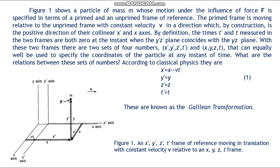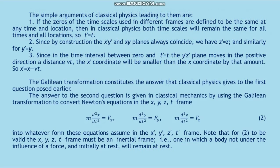Figure 1: n-x-asterisk y-asterisk z-asterisk t-asterisk frame of reference moving in translation with constant velocity v relative to the n-x-y-z-t frame. The simple arguments of classical physics leading to these are: First, if the zeros of the time scales used in different frames are defined to be the same, at any time and location, then in classical physics both time scales will remain the same for all times and all locations. So t-asterisk equals t.